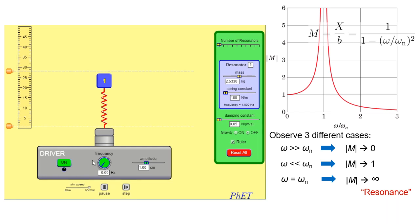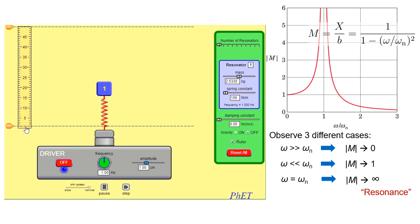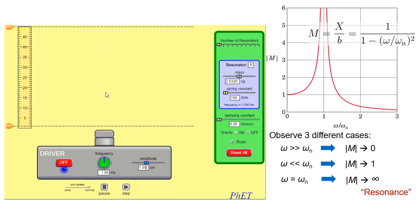Finally, let us check the resonance case where the driving frequency is set to 1 Hz — exactly equal to the natural frequency. We expect resonance to occur. And we can confirm: the oscillation goes wild and the response amplitude shoots up dramatically — theoretically to infinity, though due to the small damping present it reaches a large but finite value.